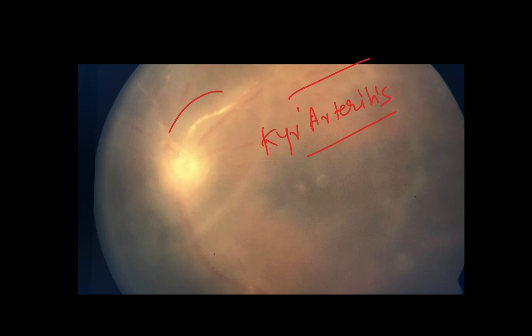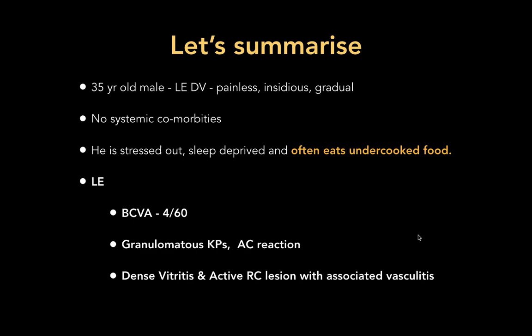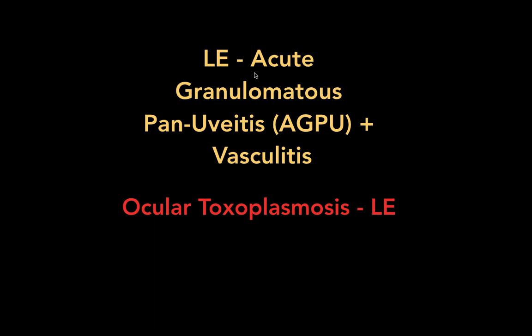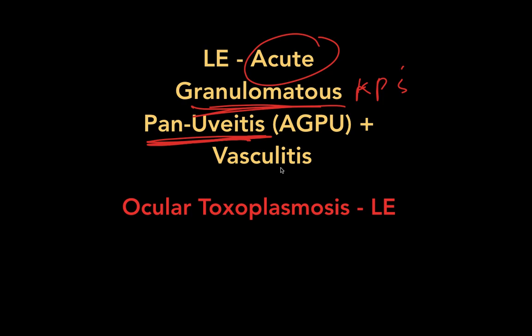To summarize: a 35-year-old male with left eye unilateral, painless, insidious-onset, gradual defective vision. No systemic comorbidities but stressed, sleep-deprived, and eats undercooked food. Best corrected visual acuity was 4/60. There were granulomatous keratic precipitates, AC reaction, dense vitritis, an active retinochoroiditis lesion with associated vasculitis. The diagnosis is left eye acute granulomatous panuveitis with vasculitis. It is a granulomatous lesion involving all structures from iris and ciliary body to choroid and retina — a panuveitis picture. The most probable diagnosis is ocular toxoplasmosis.